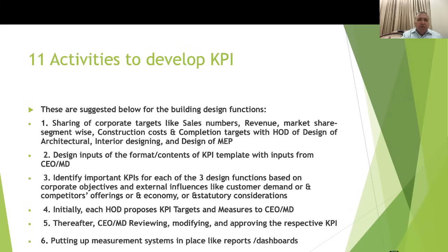There are 11 activities to develop KPIs. First, top management shares corporate objectives — such as sales numbers, revenues, market share, construction costs, and completion targets — with HODs of architecture, interior design, and MEP design. Second, design inputs from the COMD shape the KPI template format. Third, important KPIs for each design function are identified based on core objectives and external influences like customer demand, competitor offerings, economy, and statutory considerations. Each HOD then proposes KPI targets and measures to the COMD, who reviews, modifies, and approves them.